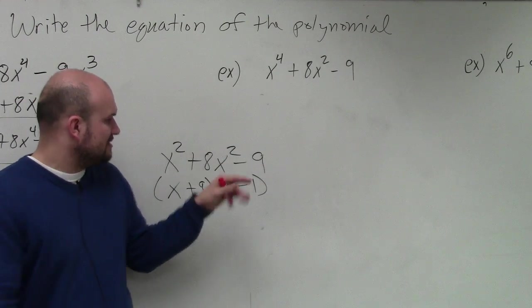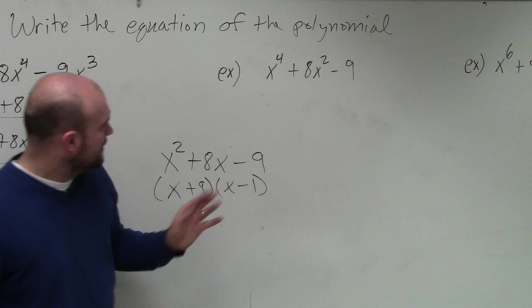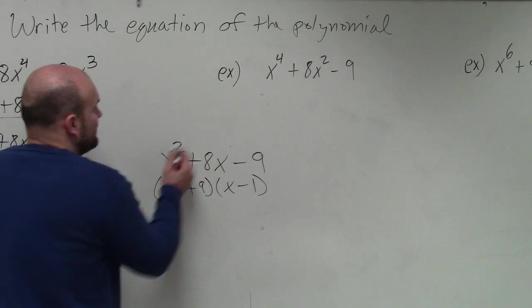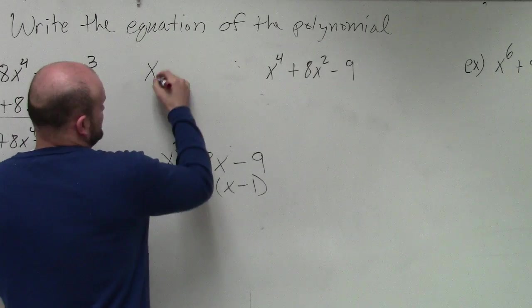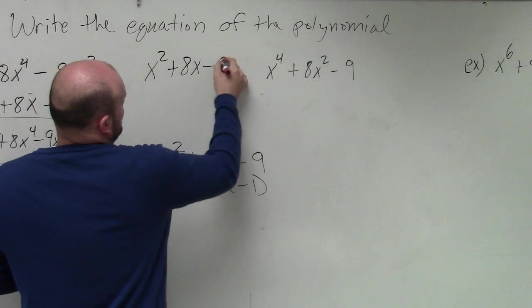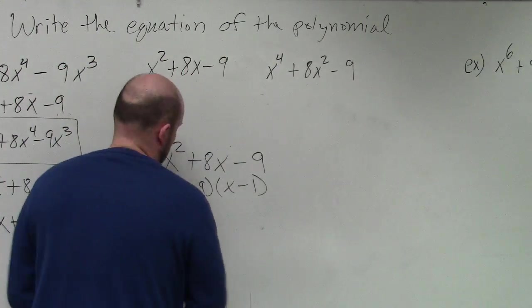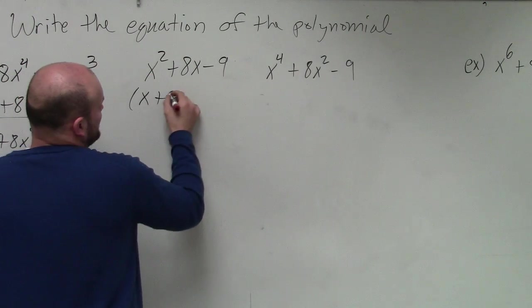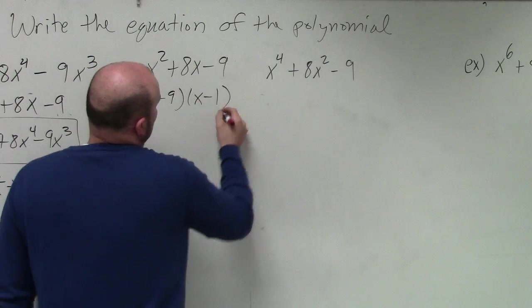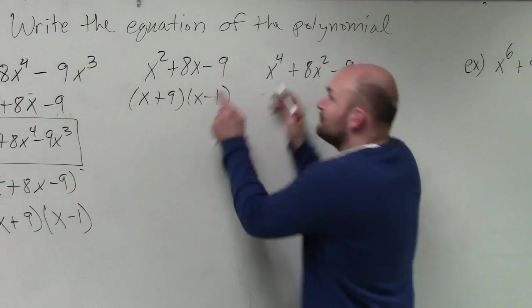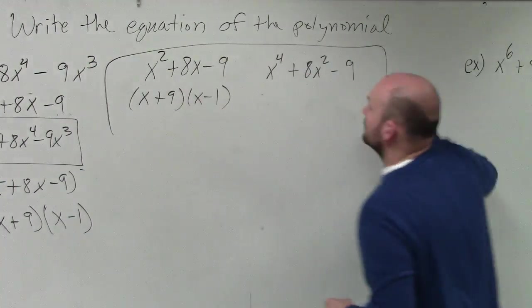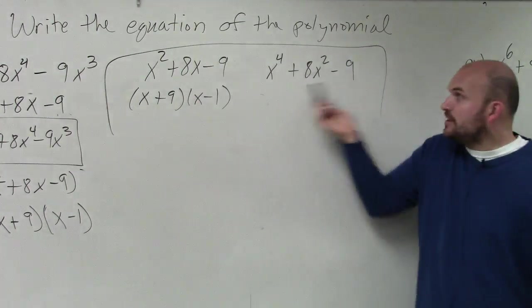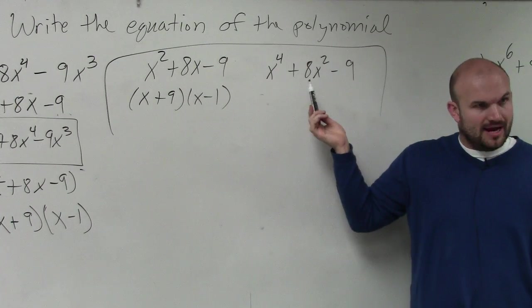So we have x squared plus 8x, not x, sorry, 8x minus 9, all right? Do you guys agree with me though, that these two problems, x squared plus 8x minus 9, when we factor this I get x plus 9 times x minus 1. Do you guys agree that these problems are very similar to each other? They're very similar. So this one is like the algebra 1 quadratic. This one is raised to a power of 4, right?